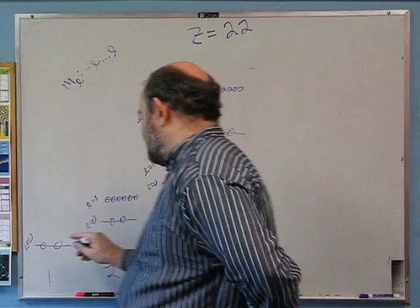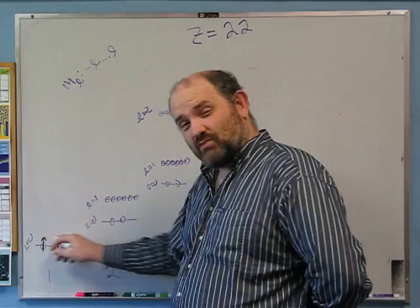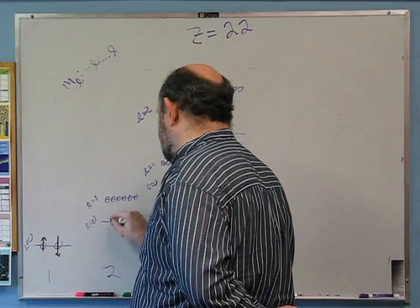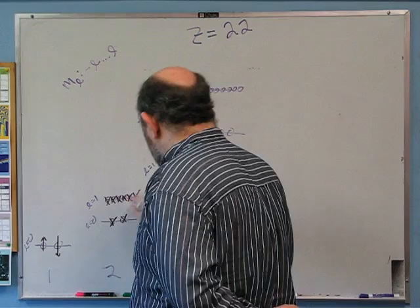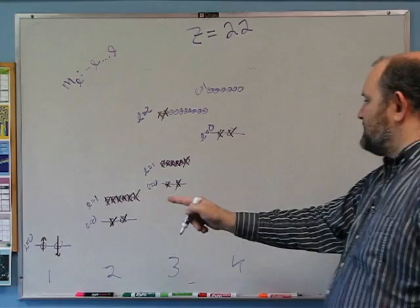So what I'm going to do is start filling in electrons — you can just X them off if you like. Sometimes people like to draw the up and the down to indicate opposite spins, but I'm just going to X them off. So: 1, 2, 3, 4, 5, 6, 7, 8, 9, 10, 11, 12, 13, 14, 15, 16, 17, 18, 19, 20, 21, 22.